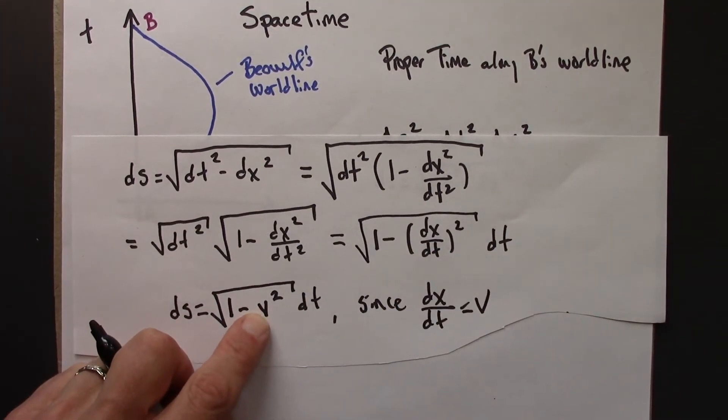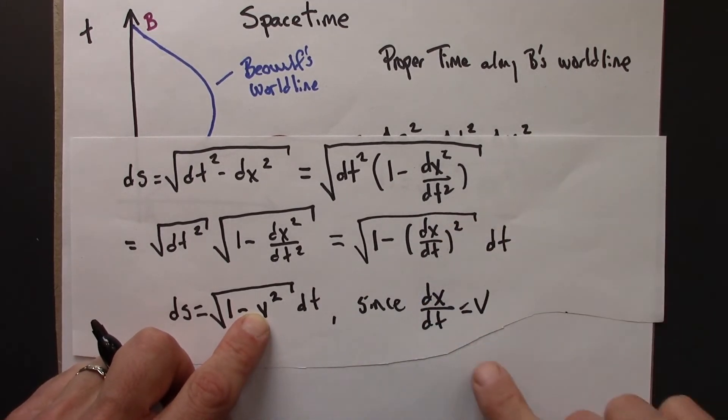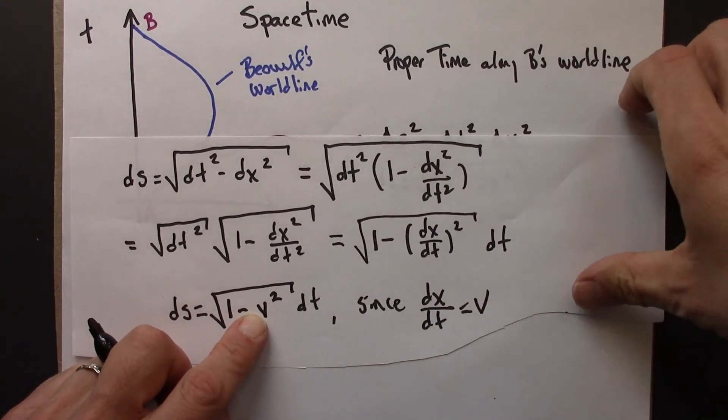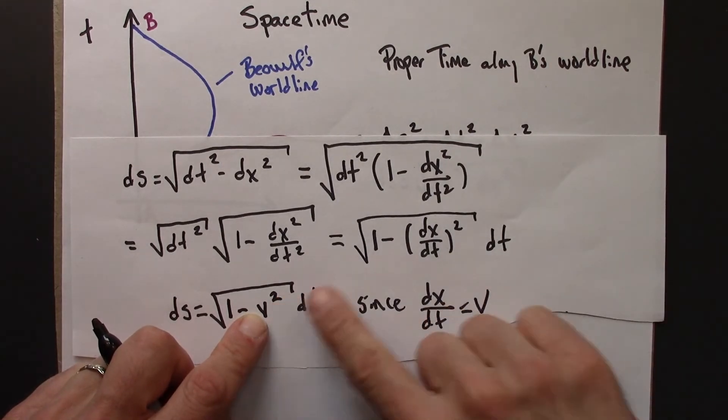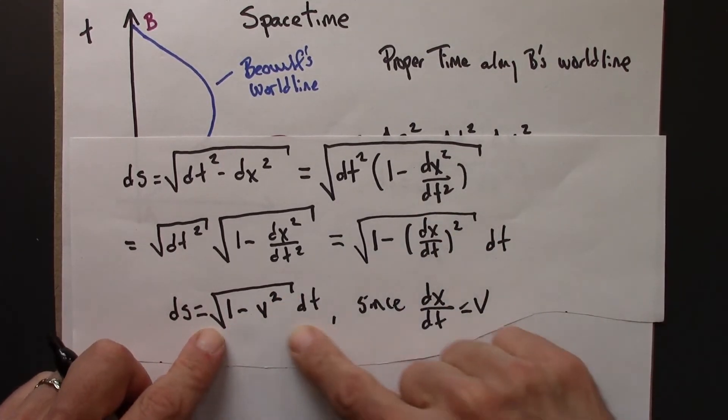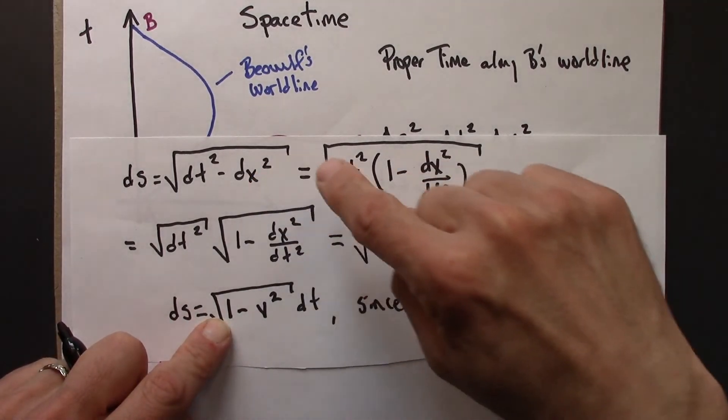I can do that because this quantity, dx dt, change in position over change in time, is the velocity. That's a little bit of algebra to get here, and then a little bit of physics using this fact. And we have this, which I think looks a lot nicer than that.